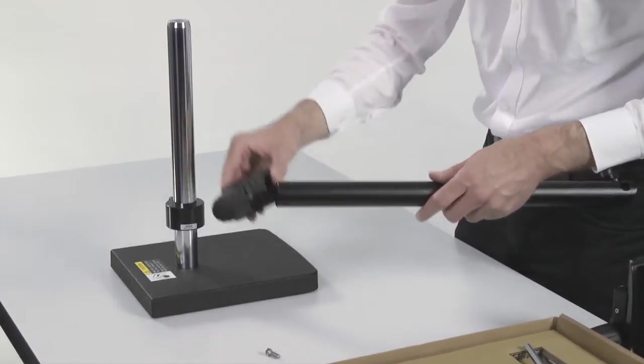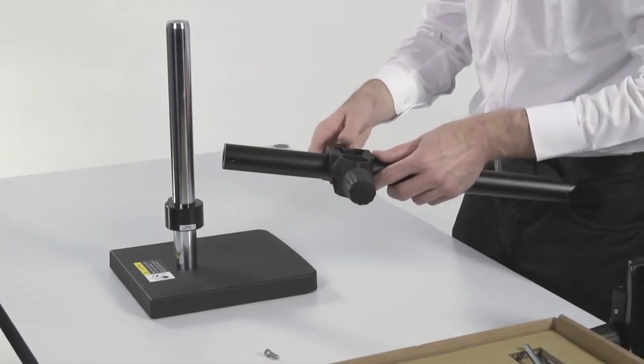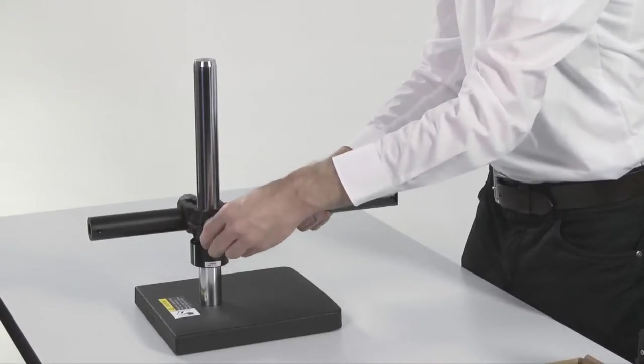The next step is to assemble the horizontal arm to its holder. Once assembled, slide this complete assembly onto the vertical column all the way down to the safety ring.